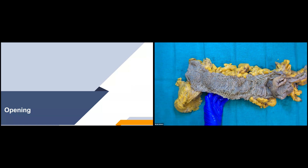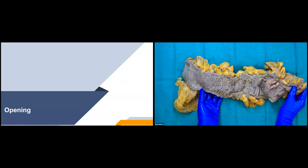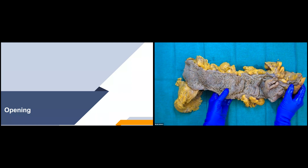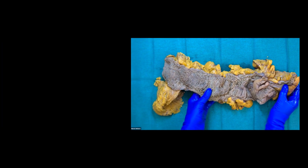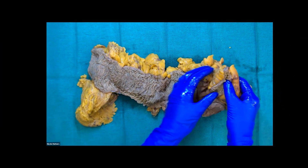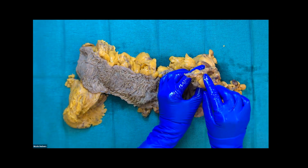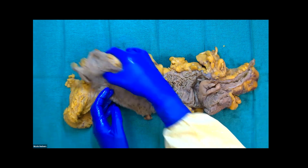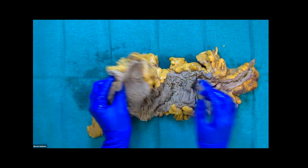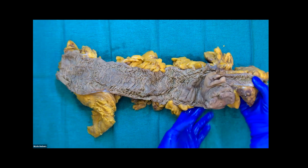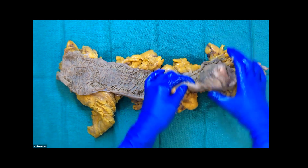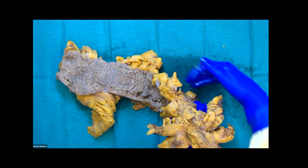Now we'll go through how to open these types of specimens — how we open them and why we open them. We open specimens to allow for formalin to enter the specimen so that it can fix properly and the tissue doesn't die and become necrotic on the inside. For colon cases, we want to hinge the staple lines, which will be at the end resection margins. Here's my staple line here that I've hinged, and here's my staple line here that I've hinged. Then I want to cut through my tenia coli, which I showed you a little bit earlier, this muscle band here.